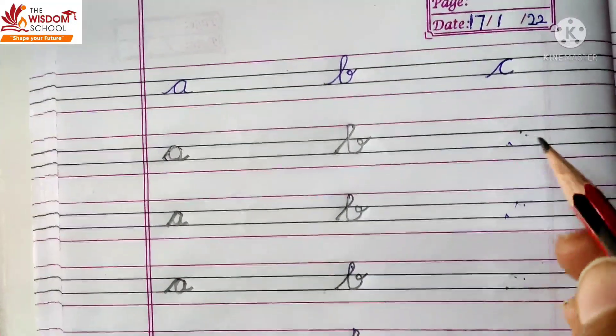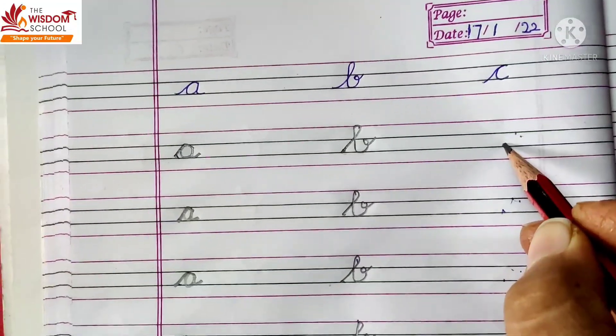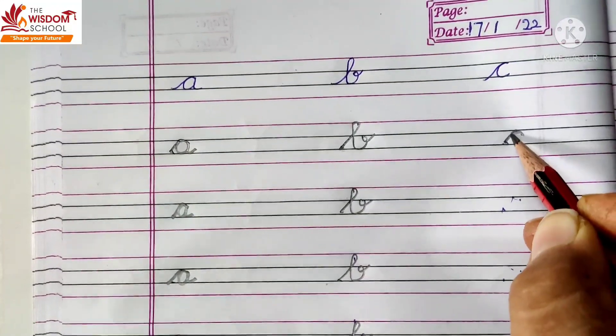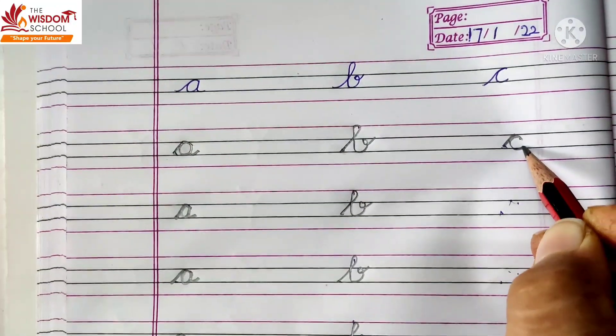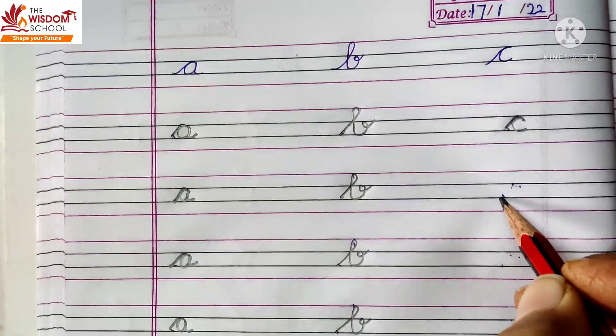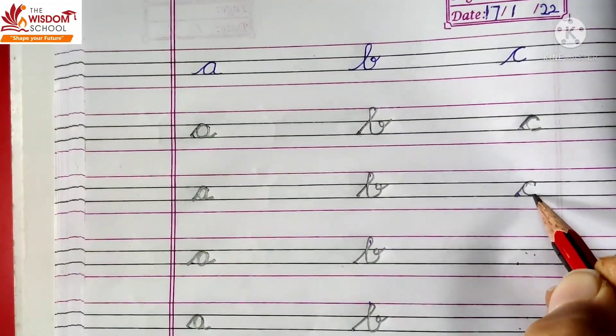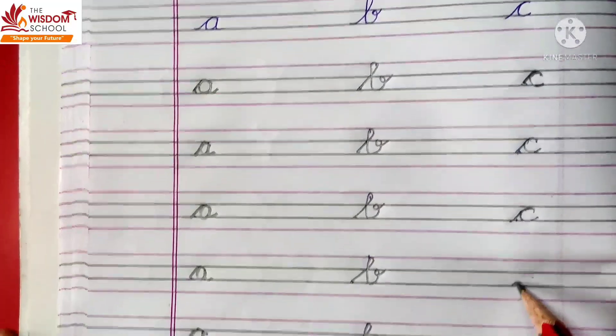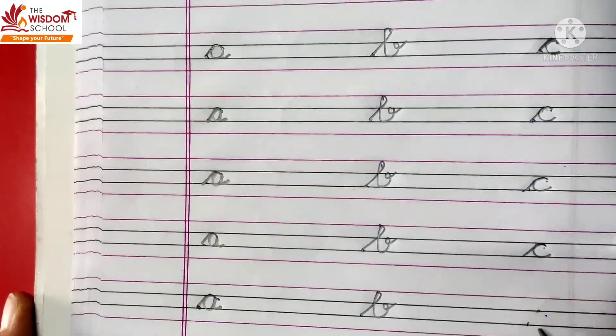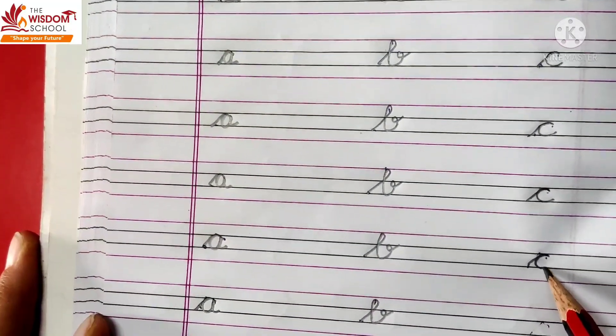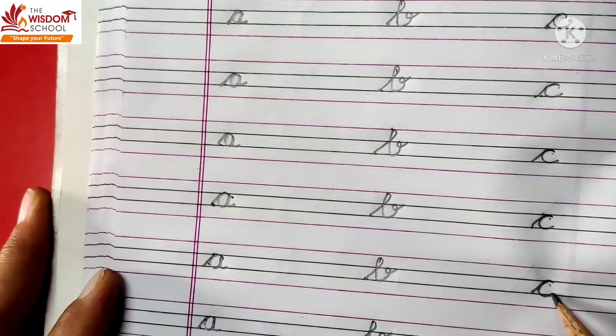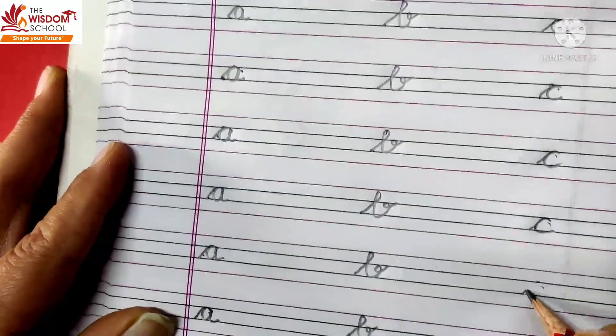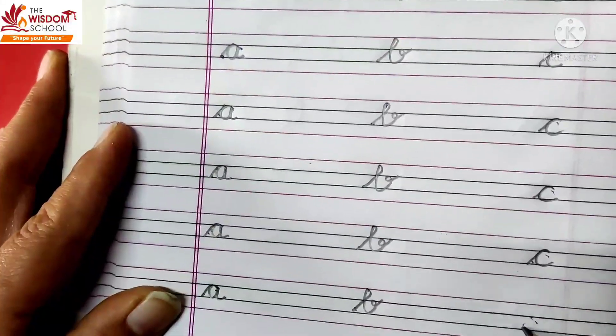B, B balloon, B bat, and there are many words which are called B. This is our B. Next is our letter C. C. How do we do it? Here, slanting line then hook and then this is a circle. This is our letter C. C cat. C, C, C. C. C. Cat, cat.